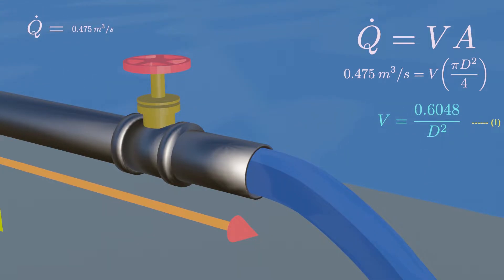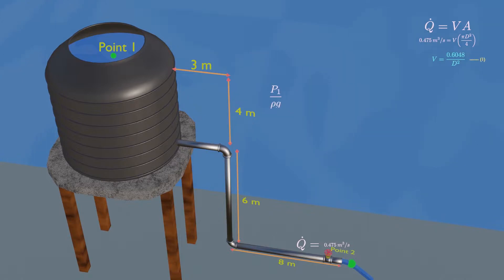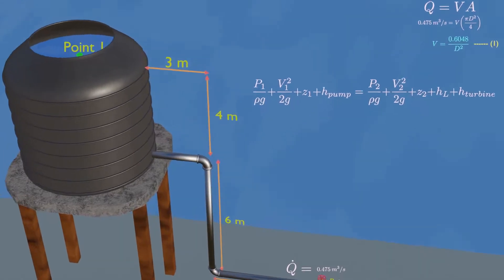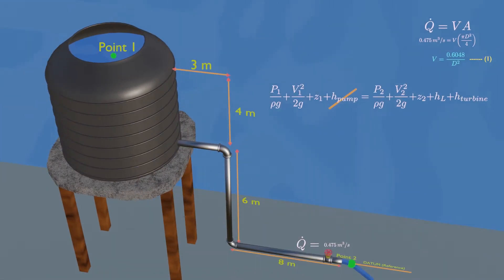To obtain a second equation relating velocity and diameter, the energy equation will be applied between 0.1 and 2, with the gravitational datum through 0.2. As there is no pump and turbine fitted, these terms cancel out.